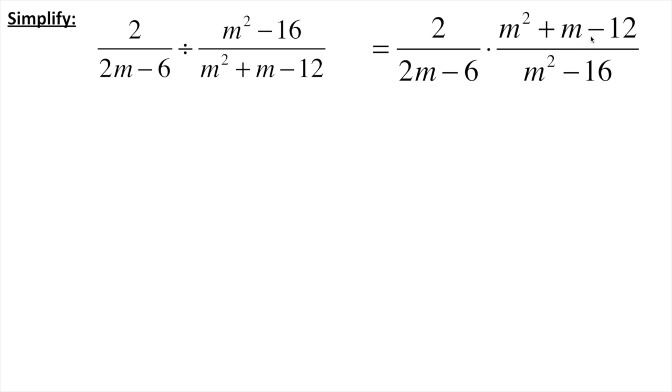So m squared plus m minus 12. I need two numbers that multiply together to give me negative 12 but add together to give me 1. That's going to be a positive 4 and a negative 3. So I'm going to rewrite this one the exact same thing that I've got up here. I'm going to rewrite it down here. The difference is I just factored this one.